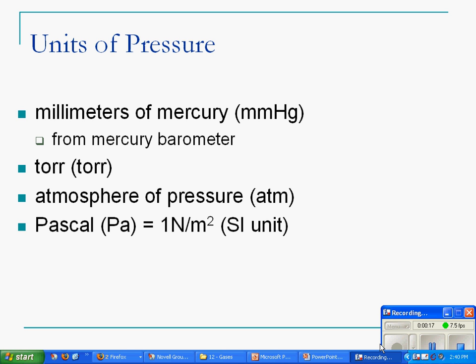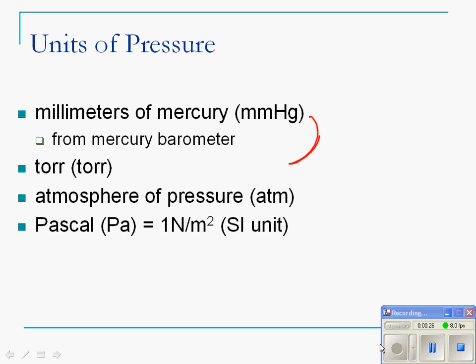So we have four units of pressure that we are actually going to be dealing with. The first of which is millimeters of mercury and torr. And these two guys are pretty much the same thing. Torr is a millimeter of mercury. It's just named after this guy, Torricelli. He was an Italian guy that did a lot of work with pressure.